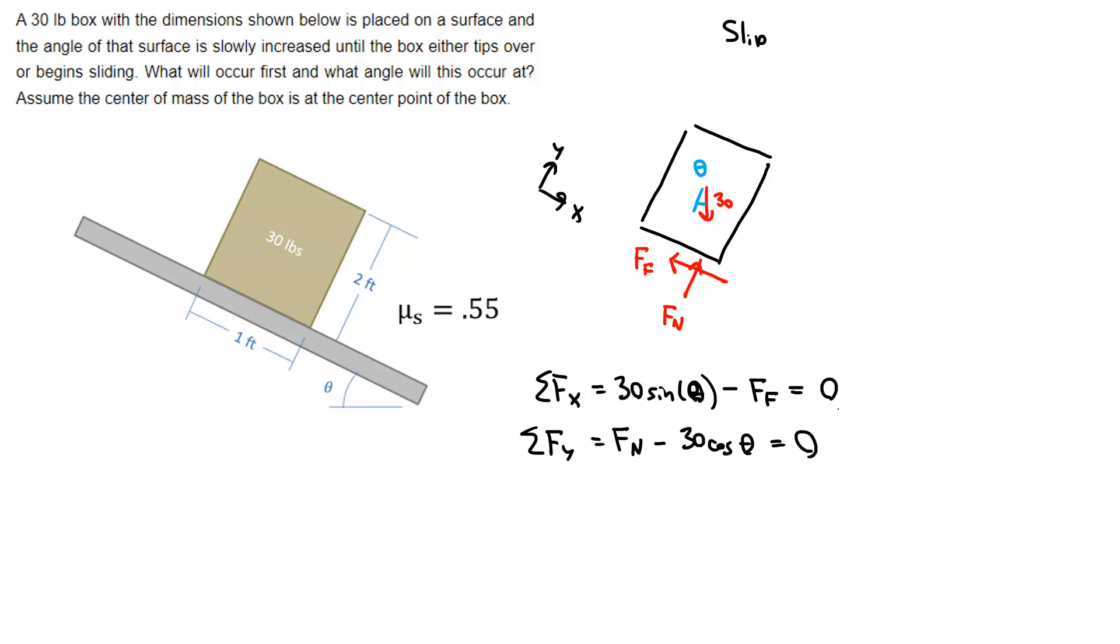Since I'm assuming impending motion, I can use the equation Ff equals the static coefficient of friction times the normal force, so 0.55 Fn. I should be able to solve this. I've got theta, friction force, and normal force as my three unknowns with three equations.